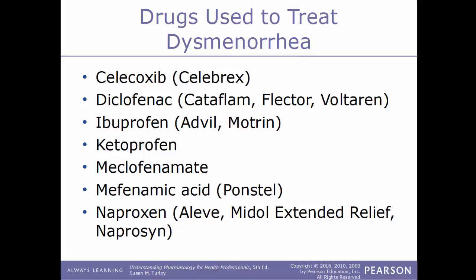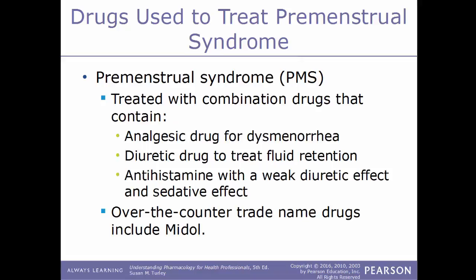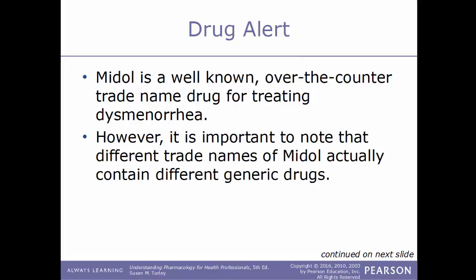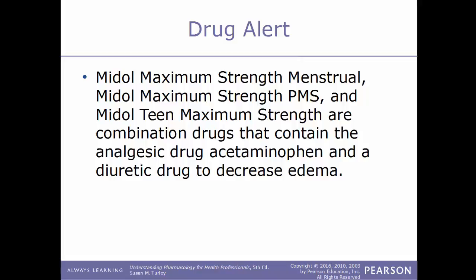PMS, premenstrual syndrome, is characterized by dysmenorrhea, breast tenderness, fluid retention or edema or bloating, and mild mood changes. This condition is treated with combination drugs containing analgesics for dysmenorrhea, diuretics to treat fluid retention, and an antihistamine with weak diuretic and sedative effects. A common example is Midol. Importantly, different trade names of Midol contain different generic drugs: Midol Maximum Strength Cramp Formula contains ibuprofen; Midol Extended Relief contains naproxen; while Midol Maximum Strength Menstrual, Midol Maximum Strength PMS, and Midol Teen Maximum Strength are combination drugs containing acetaminophen and a diuretic.